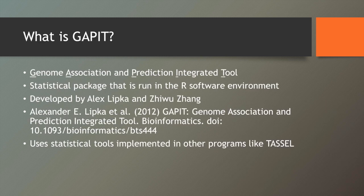So what is GAPIT? From the name, it's the Genome Association and Prediction Integrated Tool. It's a statistical package developed by Alex Lipka and Zewu Zhang at Cornell, and they are members of Ed Buckler's group. It's implemented in the R software environment, and I think that has a few advantages that you don't get with other tools like TASSEL, which is perhaps one of the reasons I like using it.